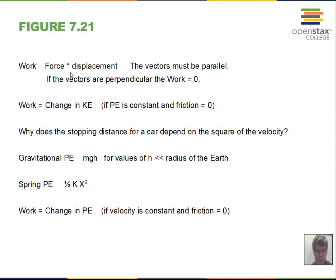In summary: work is force times displacement, but the force vector must be parallel to the displacement, or you must find the parallel component. If force and displacement vectors are perpendicular, work done is zero. Work gives us the change in kinetic energy, as long as potential energy is constant and there's no friction. Kinetic energy equals one-half mv squared; the change in kinetic energy equals the final kinetic energy minus the initial kinetic energy, and that equals the work done.